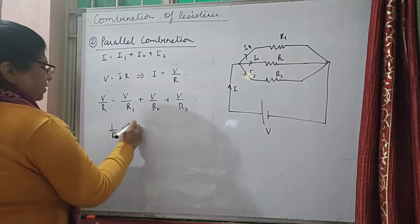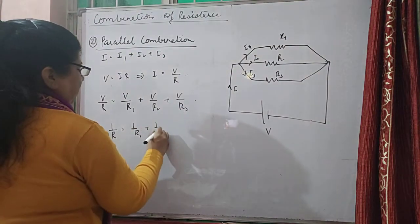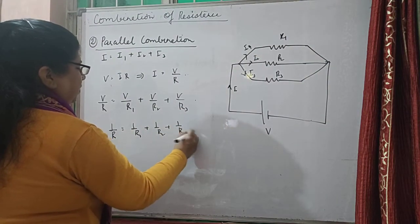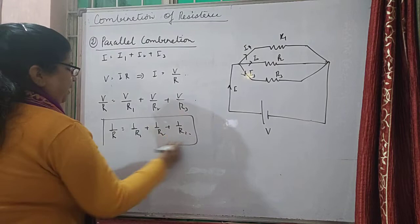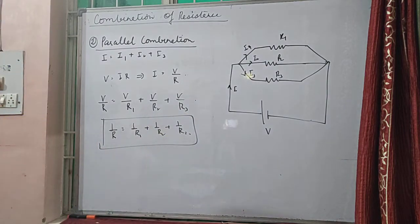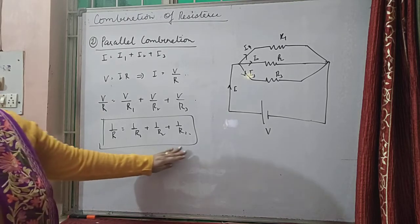v gets cancelled out. So 1 over r is equal to 1 over r1 plus 1 over r2 plus 1 over r3. The equivalent resistance of any given parallel combination is the reciprocal sum of the separate resistances.